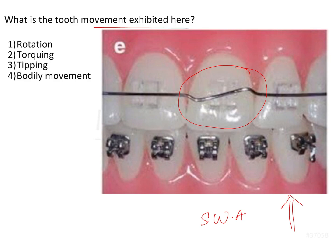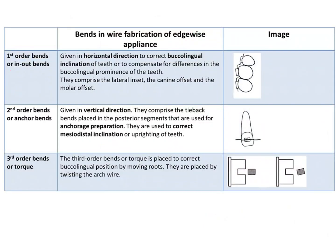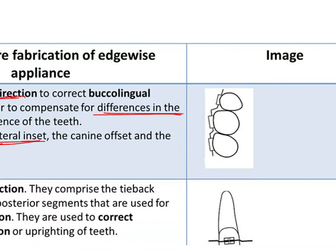There are three different types of bends: first order, second order, and third order bends. First order bends are also known as in-out bends because they were given to compensate for the buccolingual prominences of certain teeth. For example, the lateral incisor is slightly lingually placed compared to the canine and central incisor, which is known as the lateral inset. These horizontal bends compensate for these buccolingual differences and run from the buccal to the lingual direction.